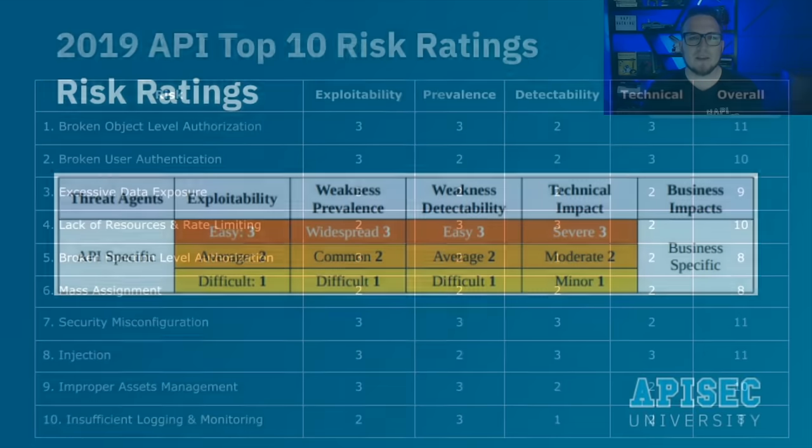API1 2023 — Broken Object Level Authorization, or BOLA, is one of the most prevalent and severe vulnerabilities for APIs. BOLA vulnerabilities occur when an API provider does not have sufficient controls in place to enforce authorization, meaning API users can access sensitive resources that don't belong to them. Attackers can exploit vulnerable API endpoints by manipulating the ID of an object sent within the request. Object IDs can be sequential integers, UUIDs, or generic strings, easily identified in the request path, query string, headers, or payload.